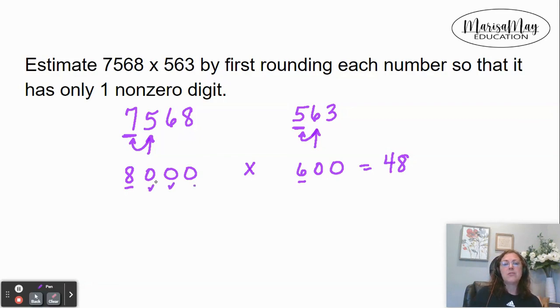Count them: one, two, three, four, five. Five zeros. One, two, three, four, five.